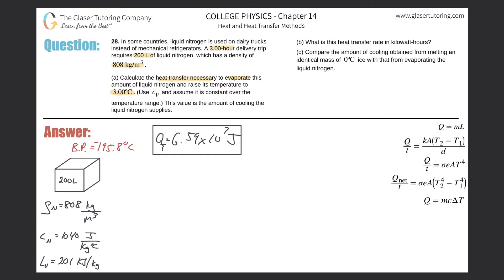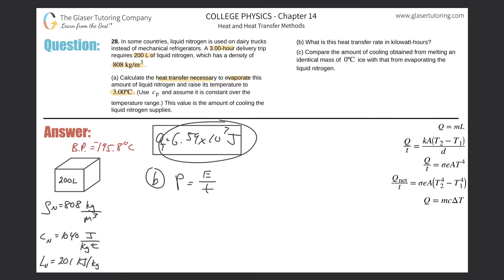Part b: find the heat transfer rate in kilowatt-hours. A watt is a unit of power, and the formula for power is energy divided by time. Setting aside the 'hours' part for now, let's first find the value in kilowatts.